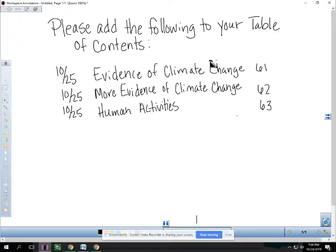These are all going to be dated October 25th. For page 61, you're going to put evidence of climate change. For page 62, you're going to put more evidence of climate change. And page 63, you're going to have human activities.